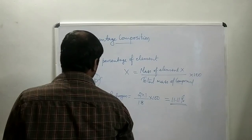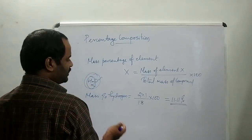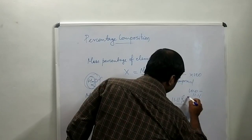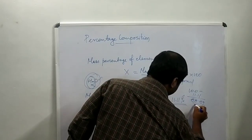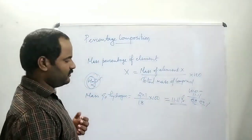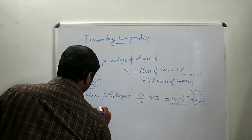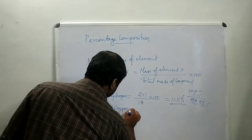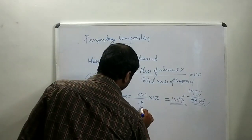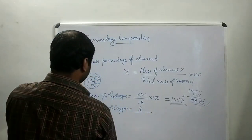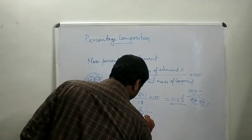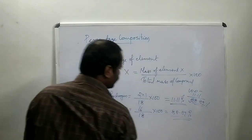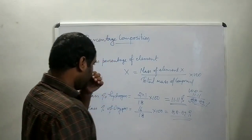Now we can find out the percentage of oxygen. Since we have only hydrogen and oxygen, we can use: 100 minus 11.11, which equals 88.89 percentage. Or by the direct method: mass percentage of oxygen equals 16 divided by 18 multiplied by 100, which gives 88.89 percentage.